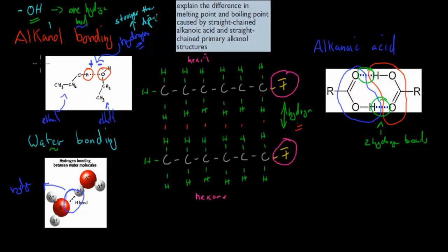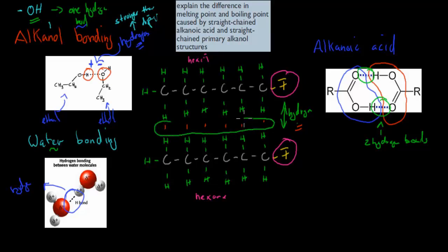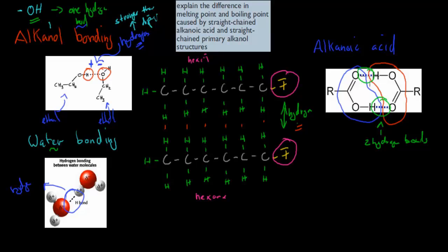To recap the dot point — explain the difference in melting and boiling points caused by straight-chained alkenoic acids and straight-chained primary alkanol structures: if both have the same number of carbons, they have dispersion forces acting equally. The difference comes from the functional group. The alkanol has one OH group, allowing exactly one hydrogen bond, which increases the boiling point because hydrogen bonds are strong and require more energy to break. The alkenoic acid has the possibility of forming two hydrogen bonds, requiring even more energy, which is why alkenoic acids have a higher boiling point than the equivalent alkanol.